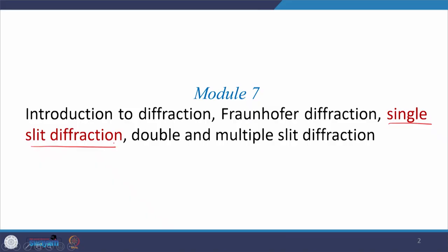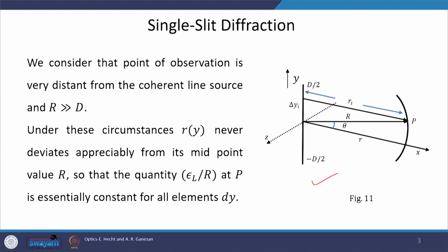Today we will start single slit diffraction and here we will calculate the irradiance pattern on the screen obtained due to a single slit. To start with, we will consider the same figure from the last class. We again have this line oscillator distribution of length d, and within this length we pick a particular section of length delta y_i. This array of oscillators is centered at the origin, with x axis pointing horizontally, y pointing vertically up, and z axis coming out of the plane of the paper.